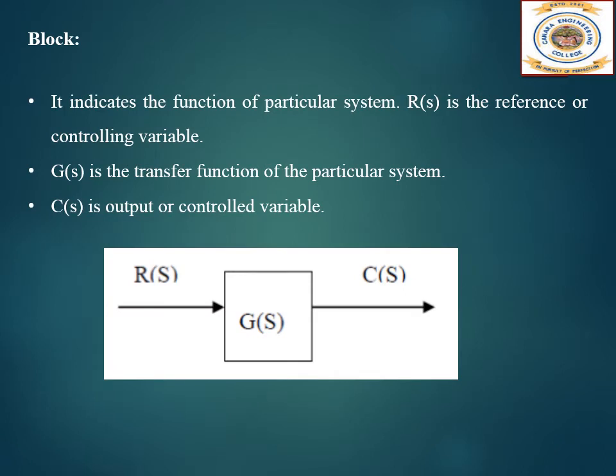Let us see what are the components in the block diagram. One is the block — it indicates a function of a particular system. R(s) is the reference or controlling variable. G(s) is the transfer function of the particular system. C(s) is the output or control variable, and in the feedback we normally denote it as H(s).